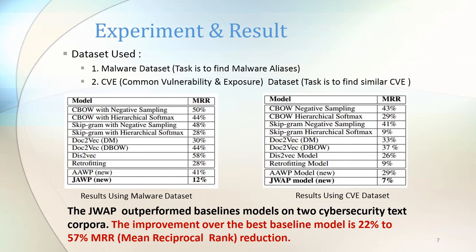We compared our models with other baseline models using two datasets. The first one is the Mallory dataset, where the task is to find Mallory aliases. The second one is the CVE dataset, where the task is to find similar CVEs. From the experiment results, we can see that our joint word annotation prediction model outperformed all other baseline models. The improvement over the best baseline model is 22 to 57% in MRR detection. So we can say that our word annotation embedding model is very useful to analyze cybersecurity text.